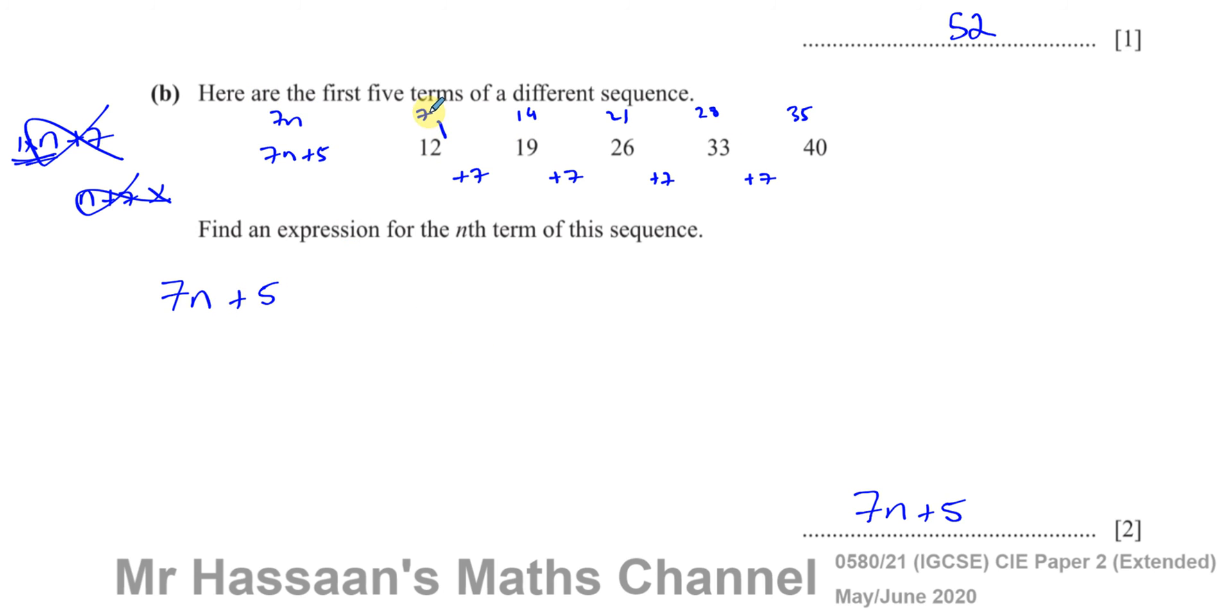This is one way you could do it. Just write the seven n on top: seven, 14, 21, 28, 35, and then see how each time we have to add the same thing. You have to add five each time to get to this number. So it's seven n plus five. That's a nice, easy way of doing it.